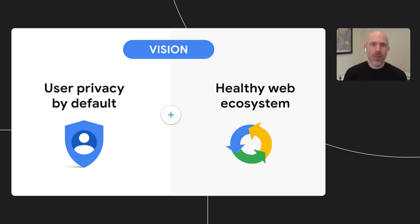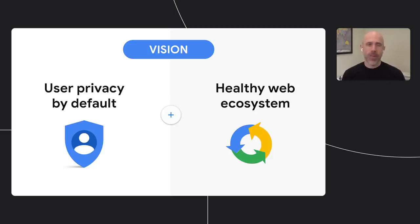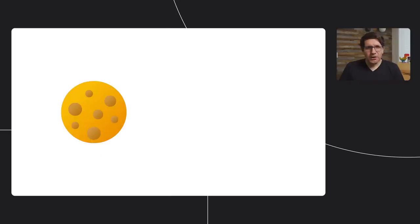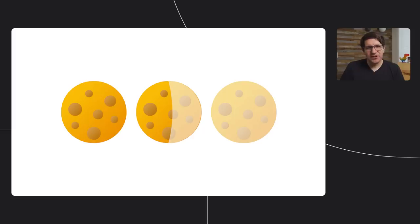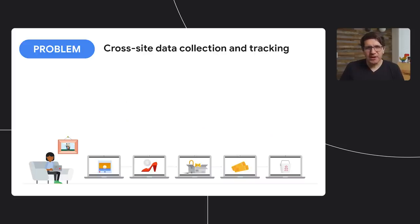We announced the Privacy Sandbox effort two years ago as an open initiative — a collaboration with the community to bring this vision to life, while carefully helping transition the web ecosystem to a new model in a thoughtful, deliberate way. Our first step, announced at Google I/O two years ago, was changing the behavior of cookies in Chrome — moving them from being visible across websites by default to being visible only to the same website that set them. Before this change, it wasn't really clear whether a cookie was intended for first-party or third-party use, and browsers needed to observe how cookies were used in the wild to infer their purpose.